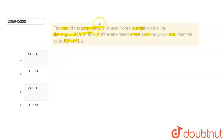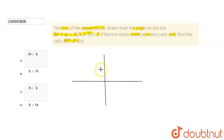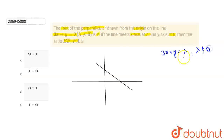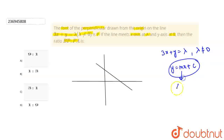तो यह 4 options दिये हैं हमें। सबसे पहले देखते हैं कि यह graph कैसा होगा। यह जो graph होगा इस line का, यह कुछ ऐसे होगा। ऐसे क्यों होगा? क्योंकि हमें यह equation दी है, lambda not equal to 0. अब हम जानते हैं कि y = mx + c एक general equation होती है, जहाँ m slope होता है और c y-intercept होता है।